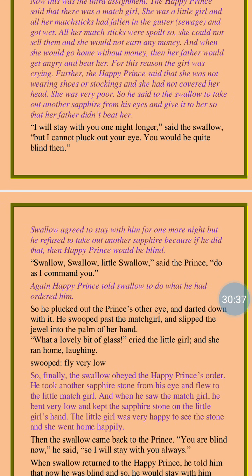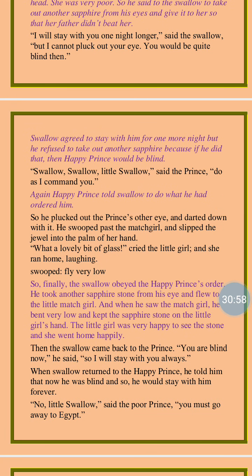'I will stay with you one night longer,' said the swallow, 'but I cannot pluck out your eye — you would be quite blind then.' The swallow said he could stay but could not take the sapphire from the eyes, as the prince would then be blind. 'Swallow, swallow, little swallow,' said the prince, 'do as I command you.' Again the Happy Prince said the swallow had to obey his instruction. So he plucked out the prince's other eye and darted down with it, swooped past the match girl, and slipped the sapphire into the palm of her hand. 'What a lovely bit of glass!' cried the little girl, and she ran home laughing.